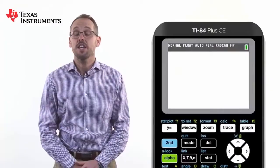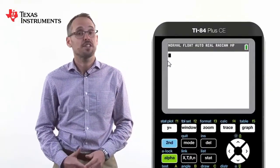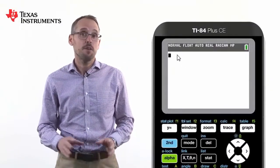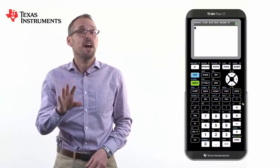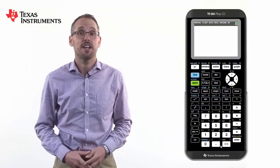So you can see the cursor in the top left-hand corner of the home screen where we can type our calculations. Don't be overawed by all the buttons. To start with, we're just going to look at the white buttons and we're going to do basic calculations just like any other calculator.